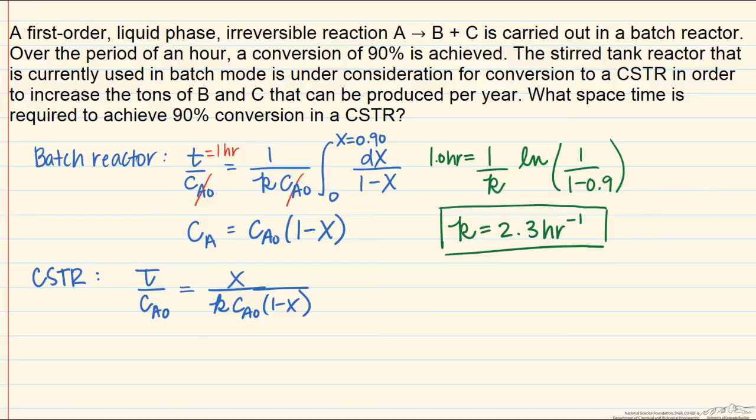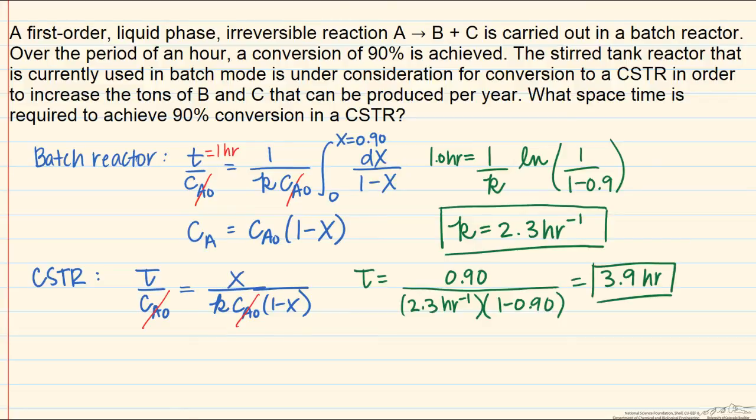We want to solve for tau in this case, and we can use this relation to do so. We can cancel out these values of Ca0 just as we did above. We still know that we want to achieve 90% conversion, so X is still equal to 0.90 for both of these values of X. The rate constant we solved for in the first part of the problem is equal to 2.3 reciprocal hours, and therefore we're able to solve for the final space time, and we find that it's equal to 3.9 hours.